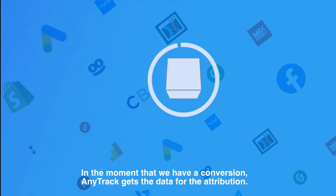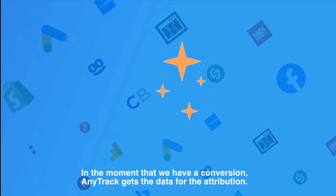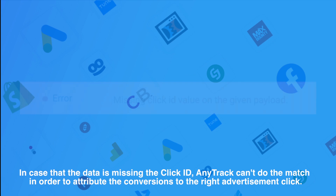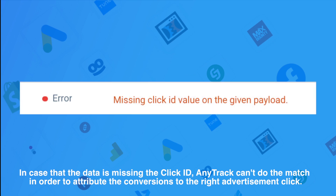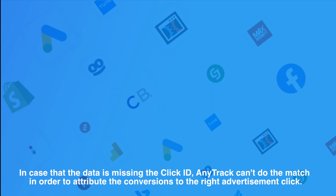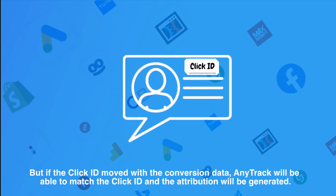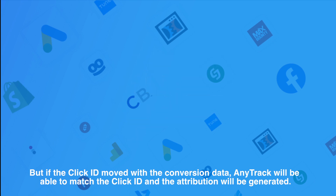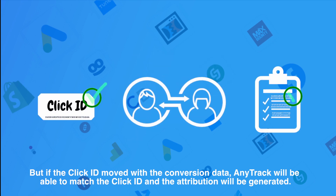In the moment that we have a conversion, AnyTrack gets the data for attribution. In case the data is missing the click ID, AnyTrack can't do the match in order to attribute the conversion to the right advertisement click. But if the click ID moved with the conversion data, AnyTrack will be able to match the click ID and the attribution will be generated.